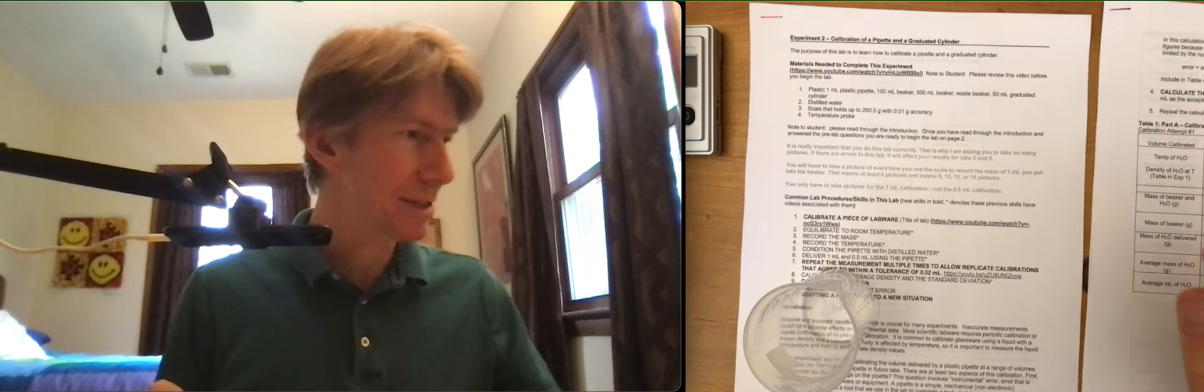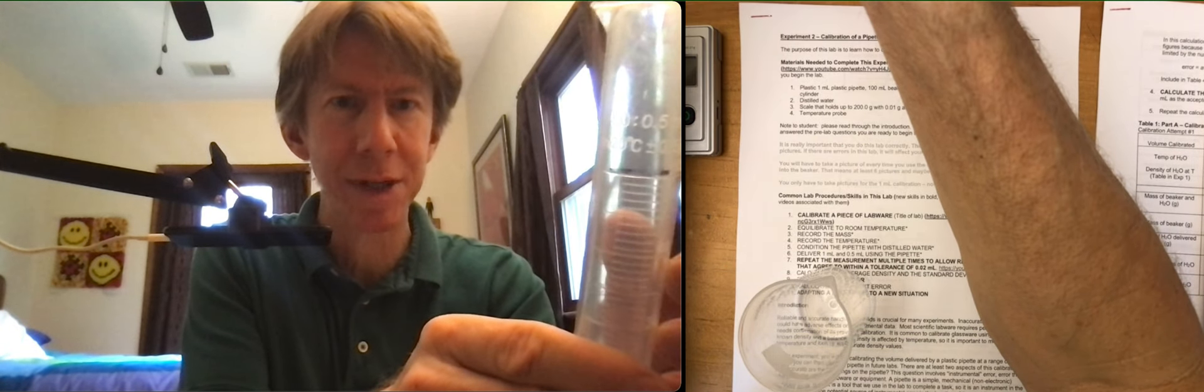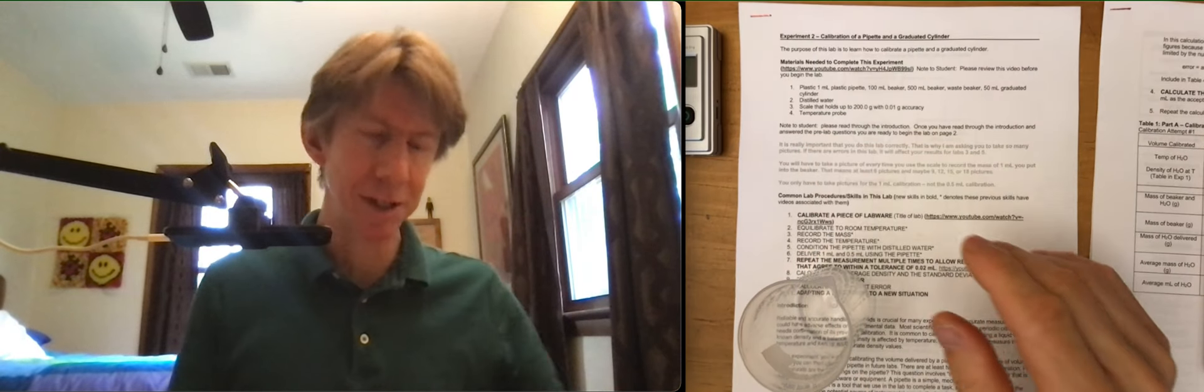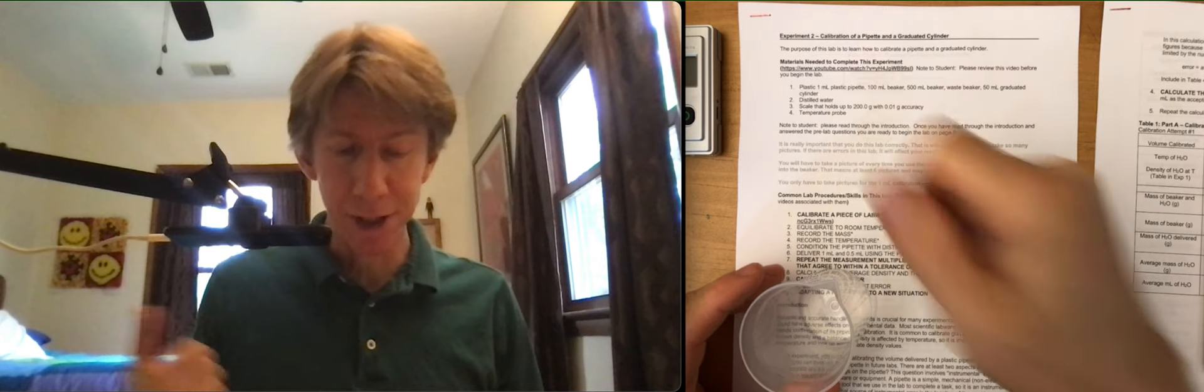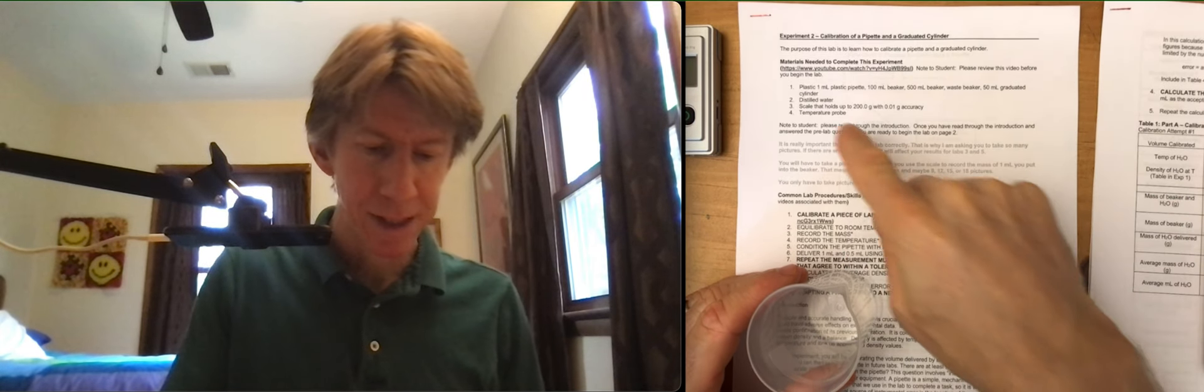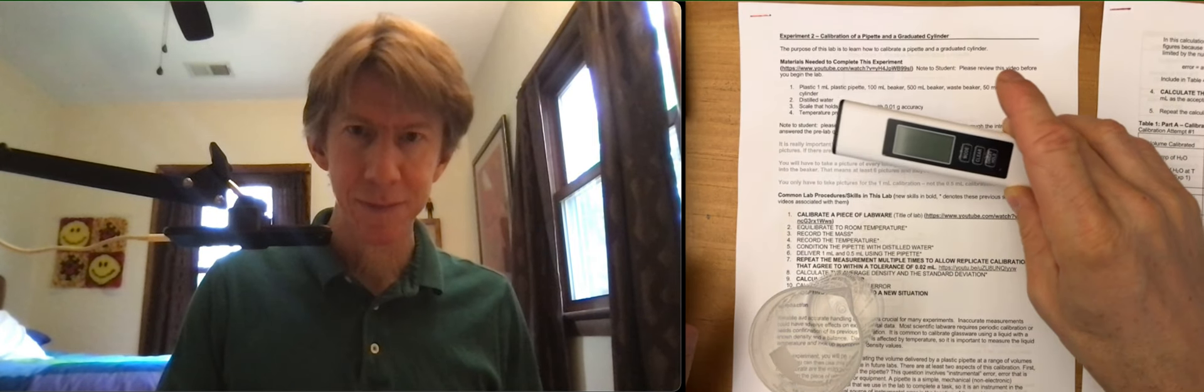A 50 milliliter graduated cylinder, and I've done this lab before so that's where my line is for the calibration of the 50 milliliter graduated cylinder. Distilled water, I used tap water. A scale that holds up to 200 grams, same scale as last time, and a temperature probe. So we've got all the pieces.